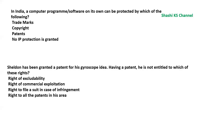Question 21: Sheldon has been granted a patent for his gyroscope idea. Having a patent, he is not entitled to which of these rights — right of excludability, right of commercial exploitation, right to file a suit in case of infringement, or right to all patents in his area? He is entitled to excludability, commercial exploitation, and filing a suit, but he is not entitled to all patents in his area. The fourth option is the answer.